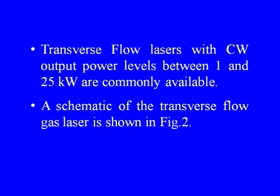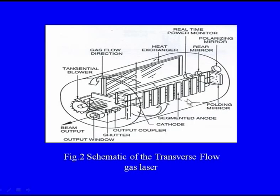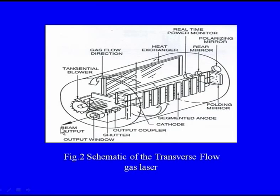A schematic of the transverse flow gas laser is shown on screen. Here the mechanism includes components like a polarizing mirror, rear mirror, and all other required components integrated in the system. The device shows the beam output path, and the gas flow direction is also indicated in the figure.